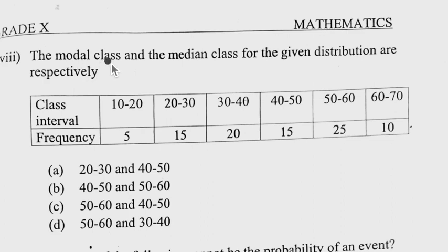We now come to question number 8. The modal class and the median class of the given distribution are respectively and this is the distribution given to us. So A, B, C, D. To begin with we won't even look at this. We will find out what is modal class. Modal class is the highest frequency occurring class. So we have highest frequency is 25. So 50-60. So can you see 50-60? So either it will be C or D.